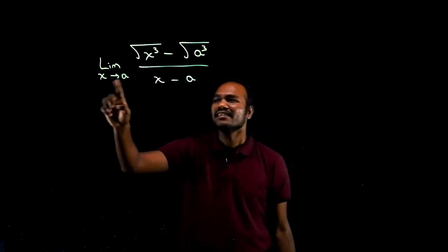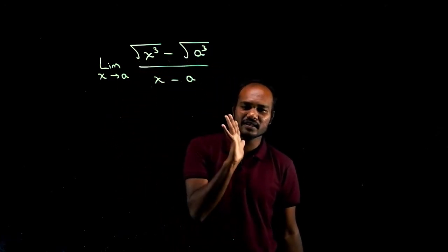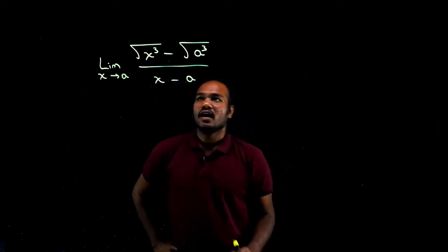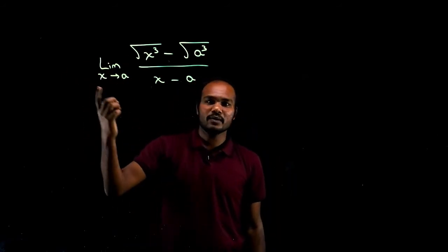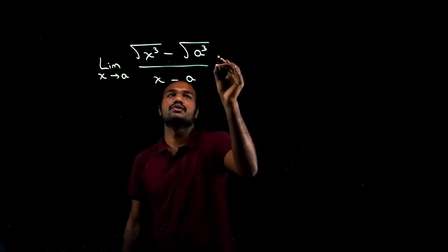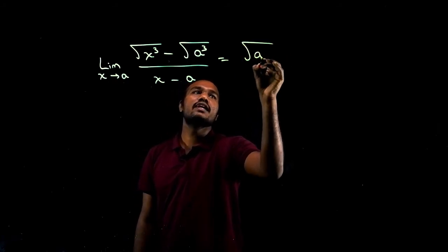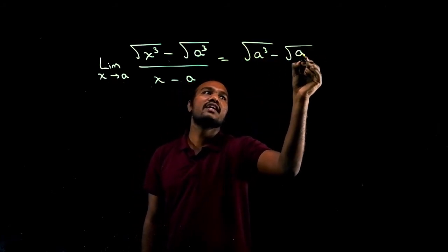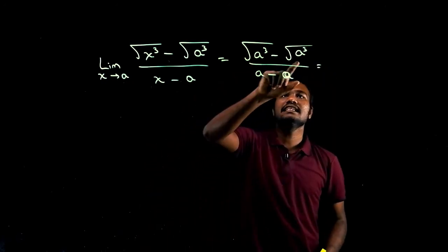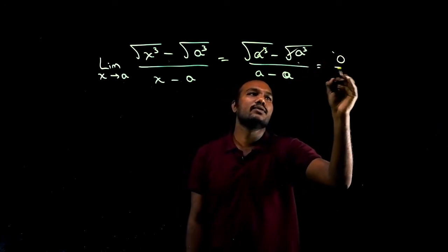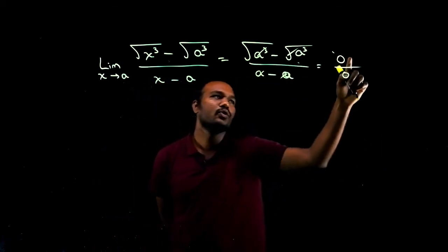Let's move to the next question. What is given? Limit x tends to a, root of x cubed minus root of a cubed divided by x minus a. It is very simple. The first thing we do: apply the limit. In place of x, substitute a. So we get root of a cubed minus root of a cubed divided by a minus a. These are the same, so numerator is 0 and denominator is 0. We have 0 by 0 form.